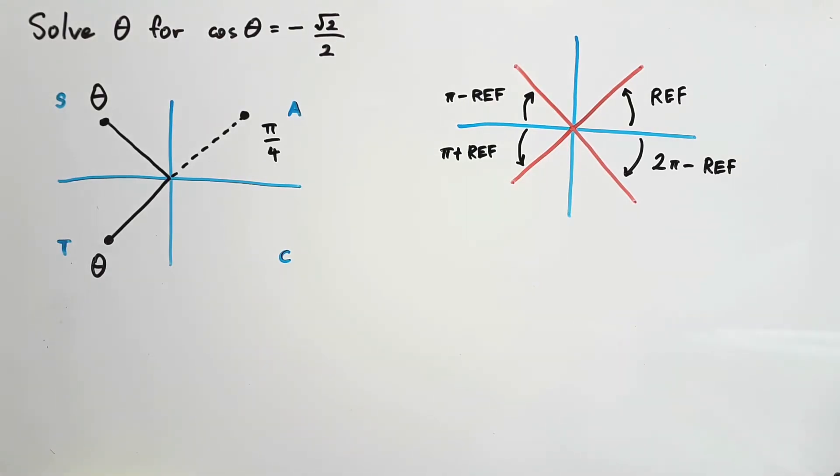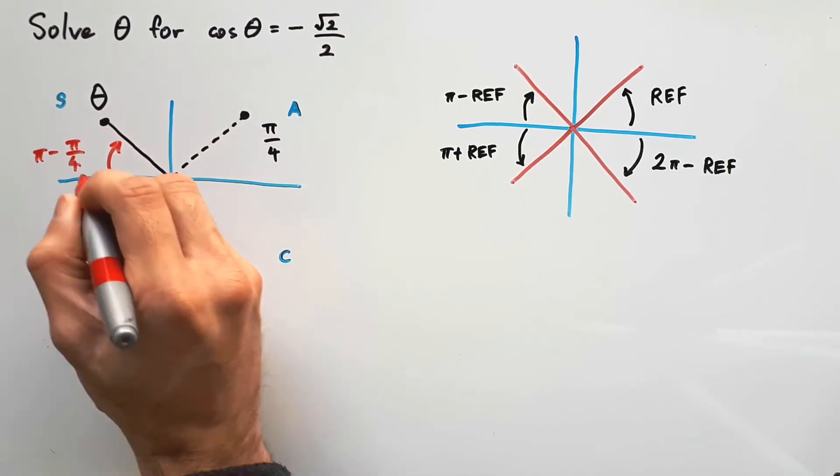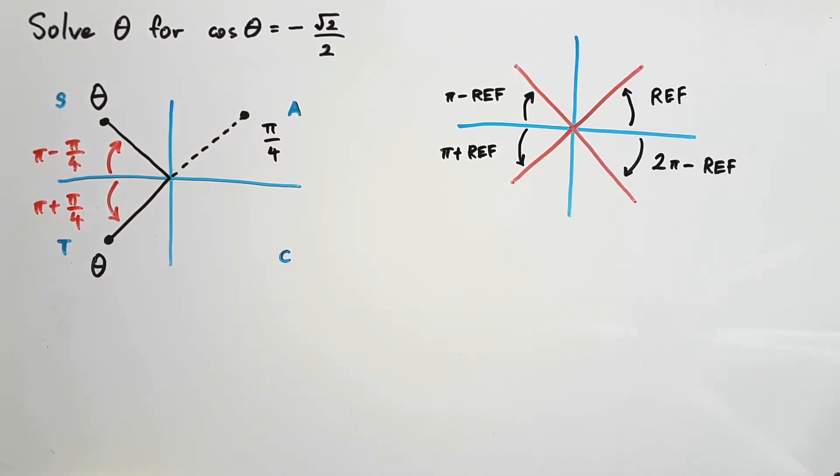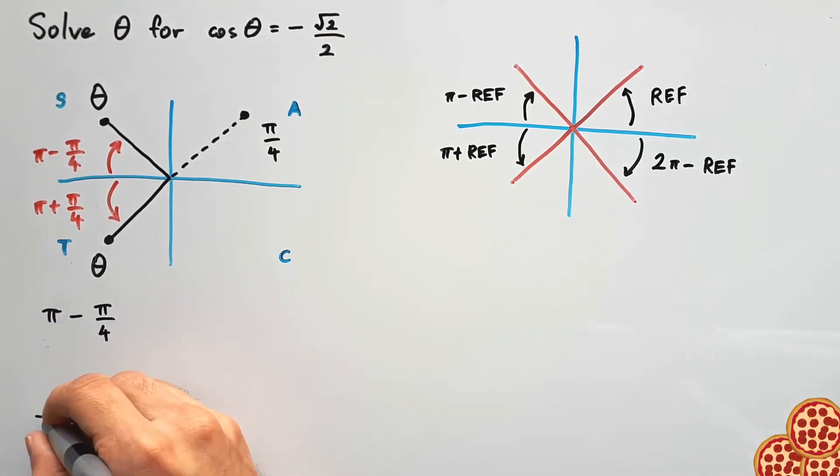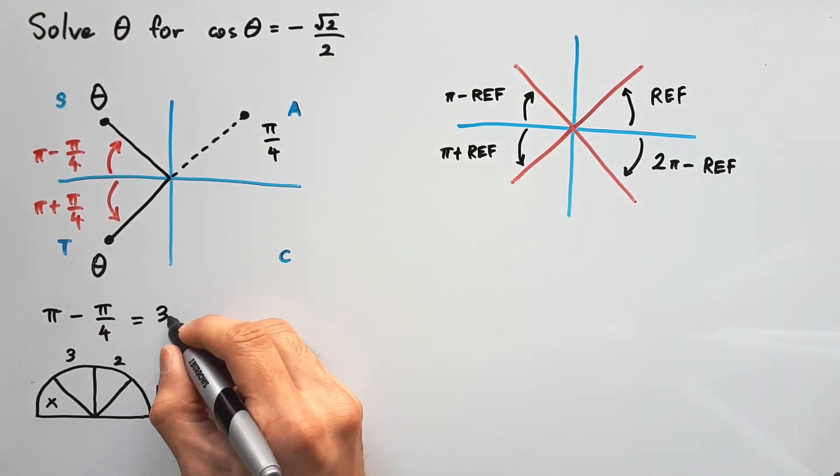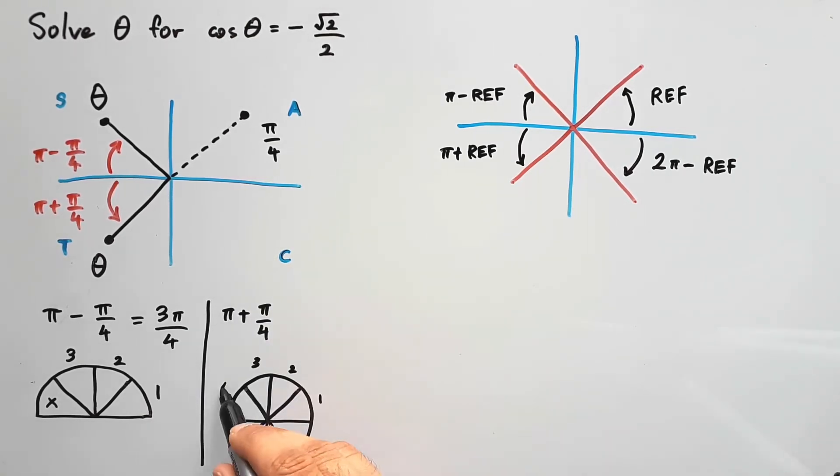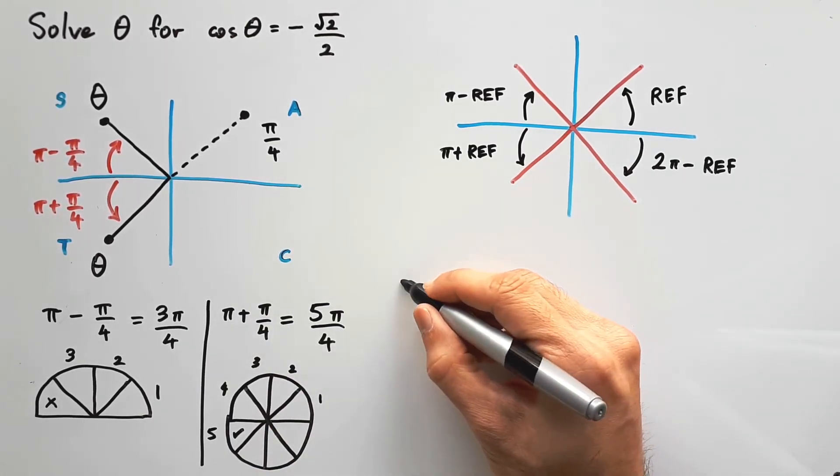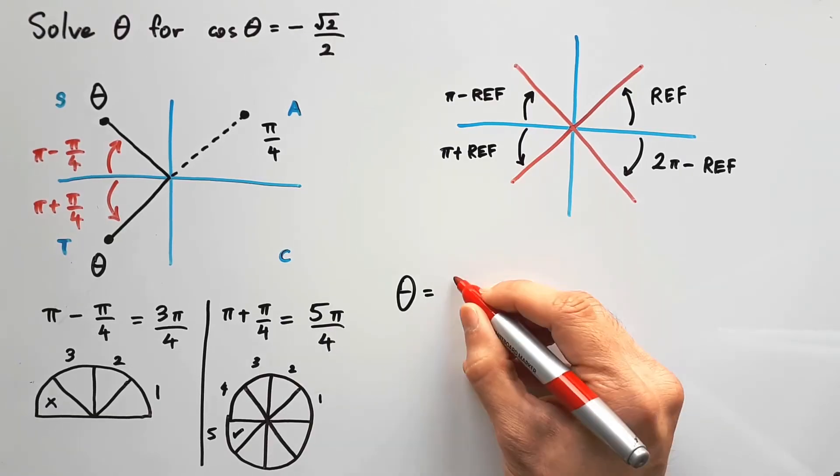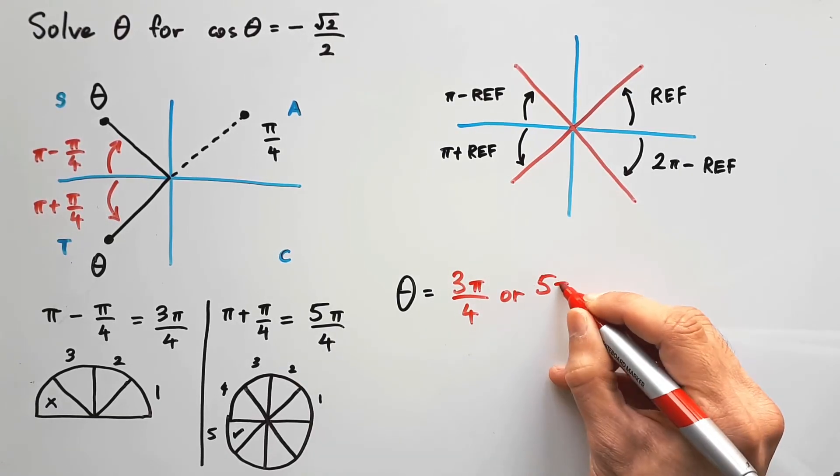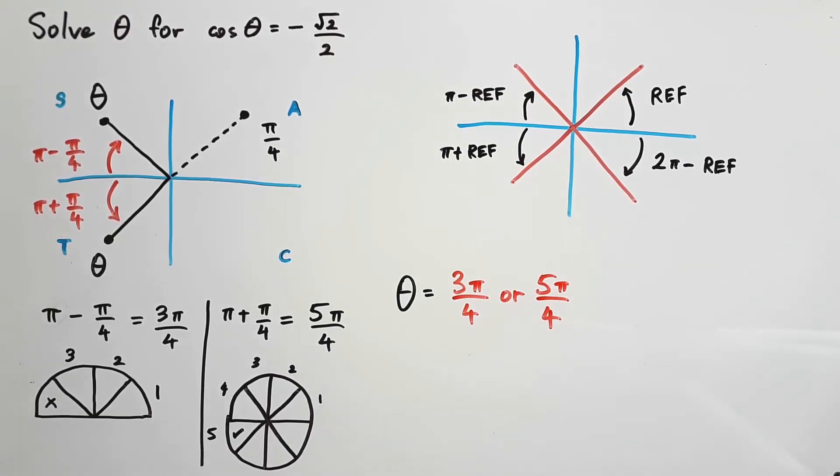In our case, subtract or add π/4 from π. You can work it out by matching denominators, but who even does that, right? I'd rather use pizza to get the answer in a flash. This is one of the reasons why radians is easier than degrees. So theta's answer is 3π/4 or 5π/4, right? We did it!